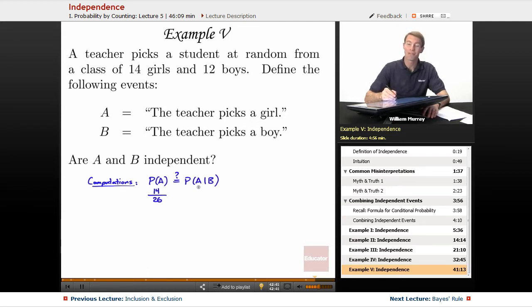Now, what's the probability of A given B? That's the probability that if you know that you picked a boy, what's the probability that you picked a girl, which is zero? Well, is 14 over 26 equal to zero? Of course not. So that tells us that the events are not independent.